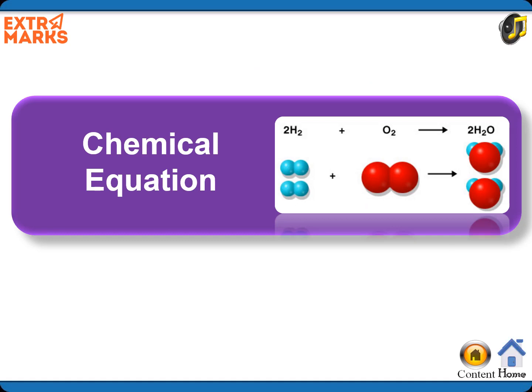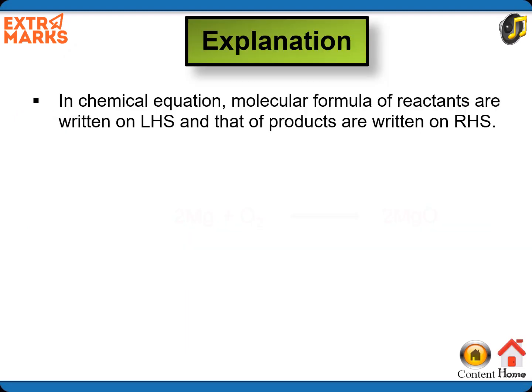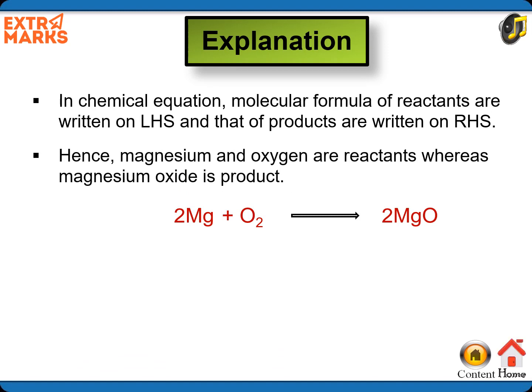Now let us try to identify the reactant and product in the following reaction. In a chemical equation, molecular formulas of reactants are written on the left-hand side and that of products are written on the right-hand side. Hence, magnesium and oxygen are reactants, whereas magnesium oxide is the product.